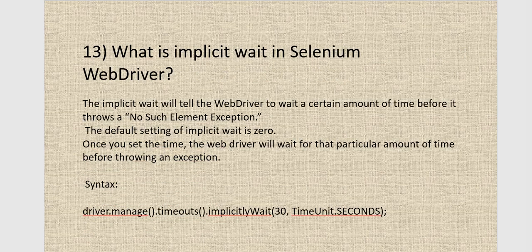The next question is: what is implicit wait in Selenium WebDriver? Implicit wait is a global wait applicable to all elements present on a particular web page. It tells the WebDriver to wait for a certain amount of time before throwing a NoSuchElementException. The default time is zero, and its syntax is: driver.manage().timeouts().implicitlyWait(time, TimeUnit.SECONDS).